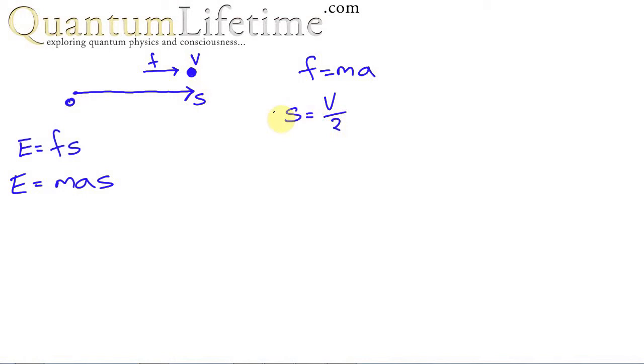That's the average by definition of average if the acceleration was constant. So the distance it travels will be V over 2 times the time that it actually takes. And that gives us here an equation that says energy equals mass times acceleration